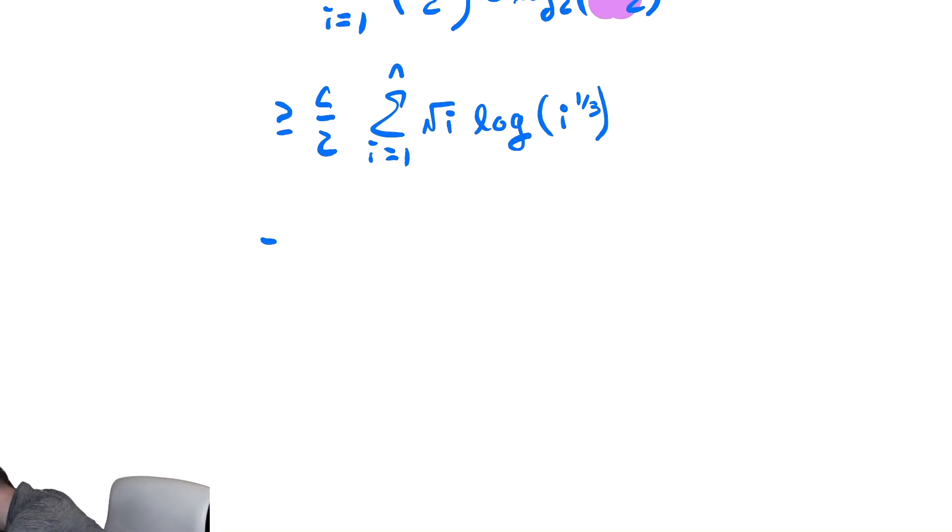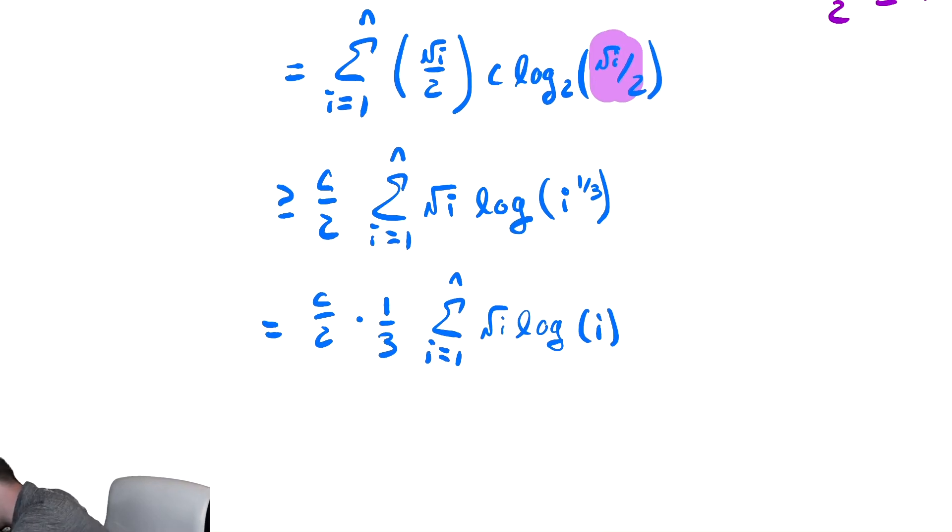So this is equal to c over two times one third. Notice I did two steps in one there. I pulled the one third out of the log and then factored it out of the summation, which you can do those two things in one go. Then we have the sum from i equals one to n of radical i log of i. Oh, at some point I lost my log base, so let's add those back in. We need a two and a two.